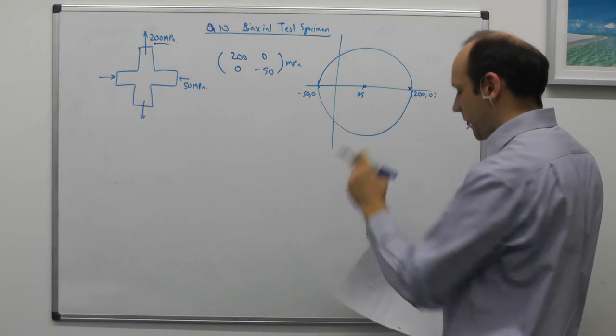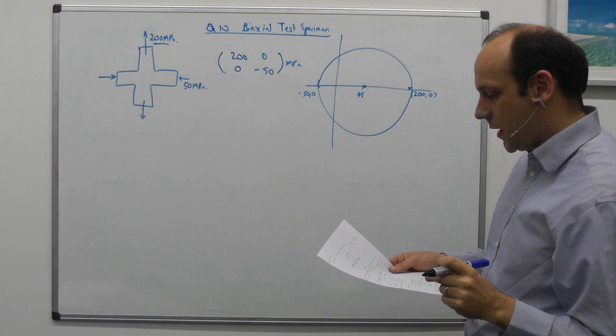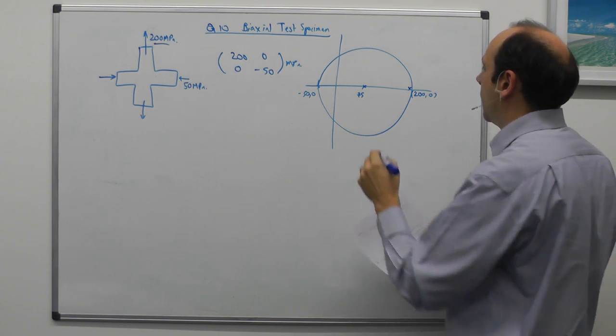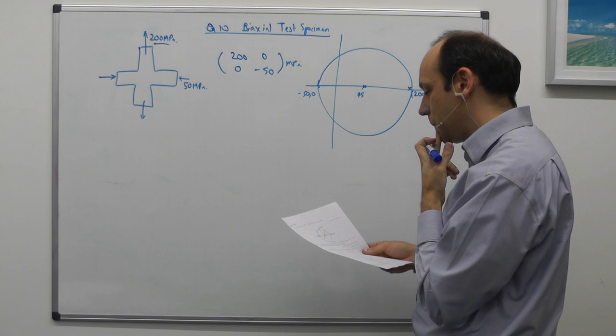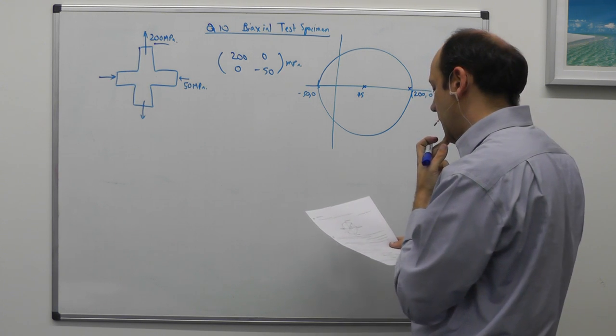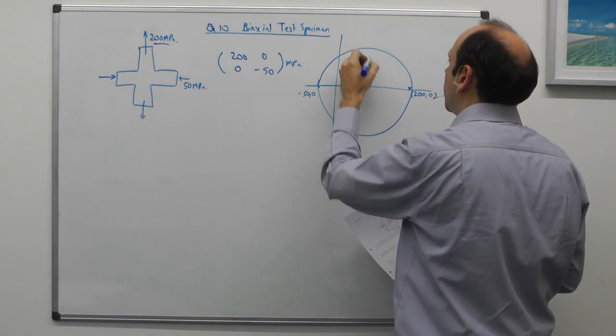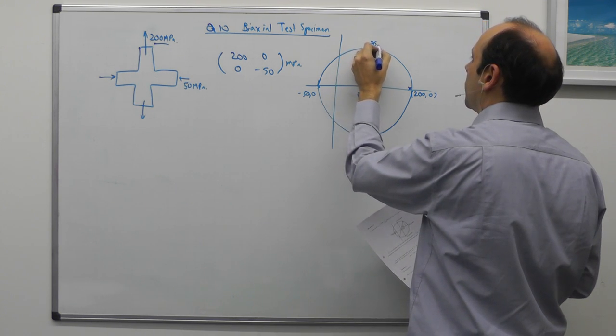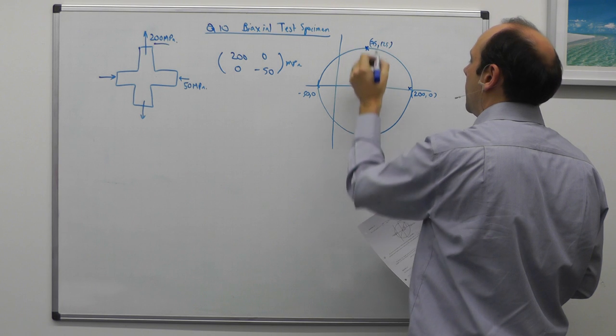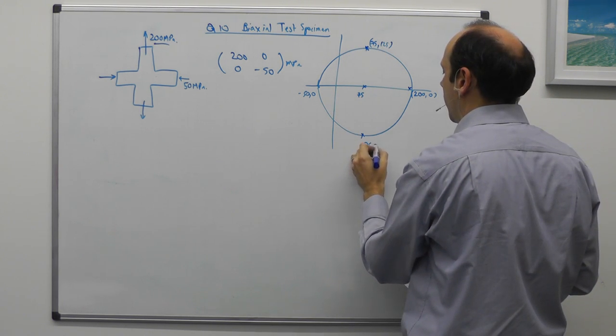So that's 125 that way and 125 that way. And the radius here is 125. And so at max shear, we're at this condition, which is 75 comma 125 and 75 comma 125.